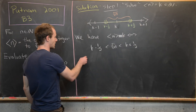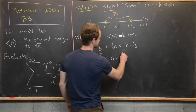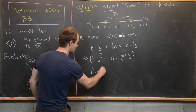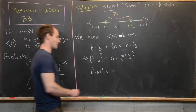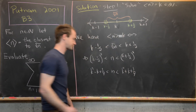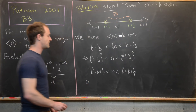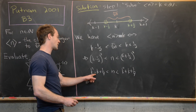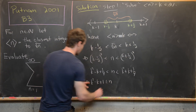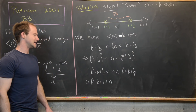Now I want to square all three sides of this inequality. That gives k minus one-half squared is less than n, which is less than k plus one-half squared. Multiplying out, we get k squared minus k plus one-quarter, less than n, less than k squared plus k plus one-quarter. Since n is a natural number and n is greater than k squared minus k plus one-quarter, n must be greater than or equal to k squared minus k plus 1, which is the first natural number larger than that value.